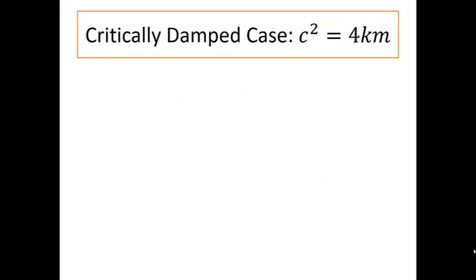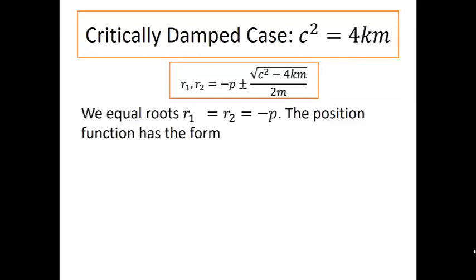The second case is what we call the critically damped case when C squared is equal to 4KM. Again going back to our formula for the roots, in this case we see that square root part completely disappears. So we have equal roots R1 and R2 at the single root of multiplicity 2. In that case, our position function has the form X of T equals C1 plus C2 T times e to the minus P T.